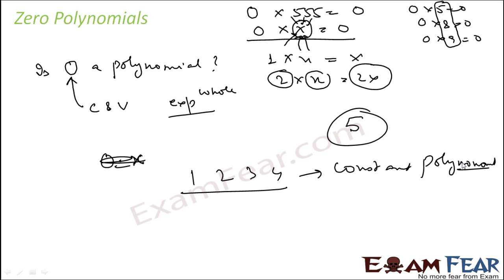0 is a very powerful number. 0 is so special that we have a different category for zero polynomial. 0 is the only number in that. So 0 is a polynomial and 0 is called zero polynomial. We'll see the importance of zero polynomial which is different from constant polynomial.